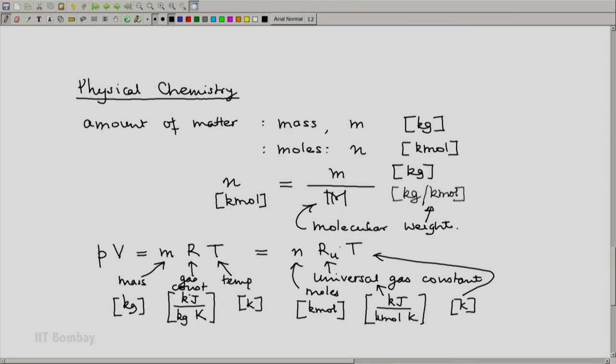The advantage of this is this number, the universal gas constant, is independent of the identity of the gas and the value is 8.314.